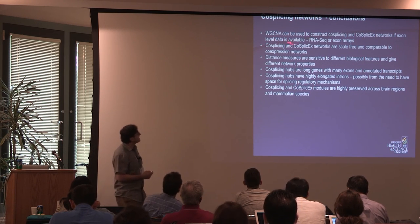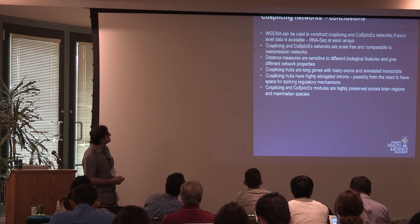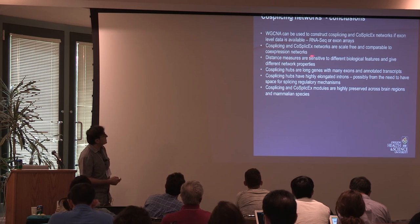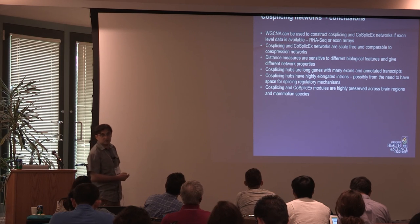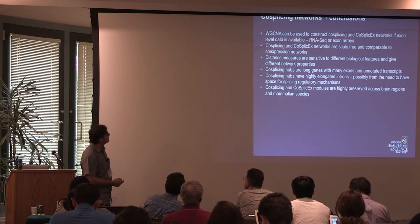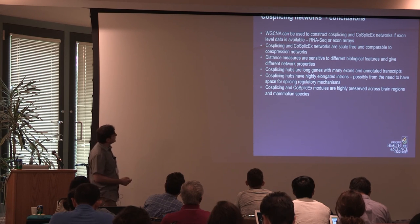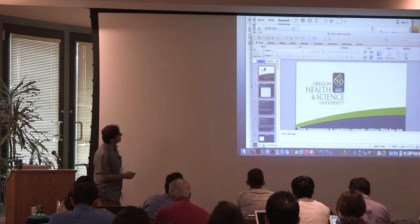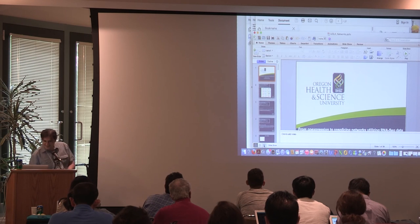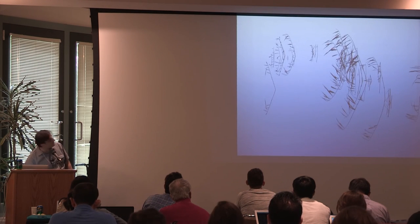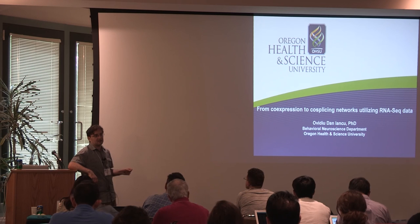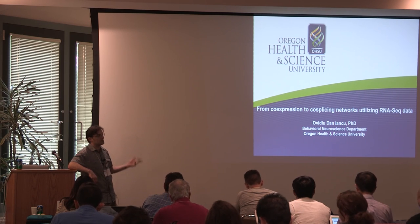My conclusions: WGCNA can be used to construct co-splicing and co-splicex networks, and these are scale-free and comparable to co-expression networks. The distance measures are sensitive to different biological features. Co-splicing hubs are long genes with highly elongated introns, and the modules are highly preserved across brain regions and species. Future directions include doing the downsampling analysis to see how robust this is in different statistical terms.